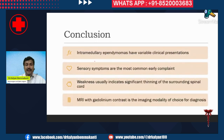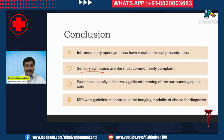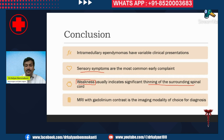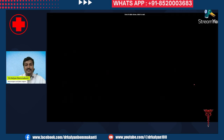In conclusion, intramedullary ependymomas have variable clinical presentations. Sensory symptoms are the most common early symptom. Weakness usually indicates that the tumor is already large in size and has been growing for a long time. Diagnosis is made with MRI with gadolinium contrast, but the definitive diagnosis is made with biopsy during surgery.